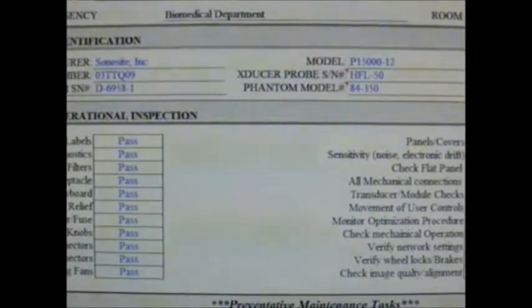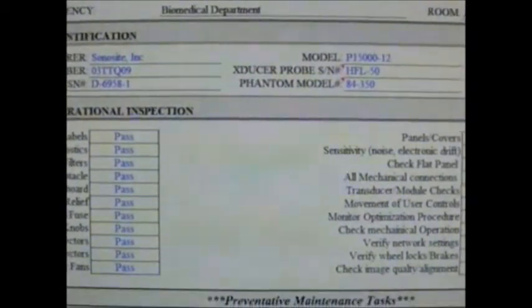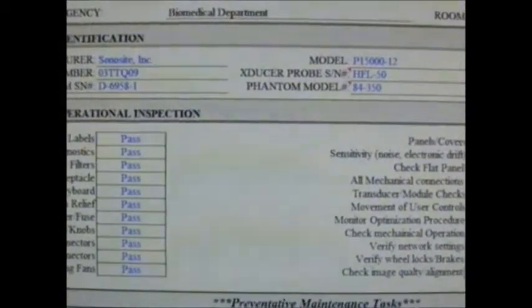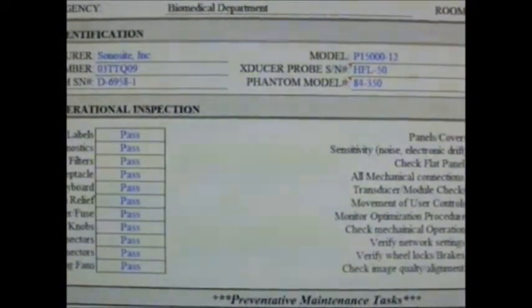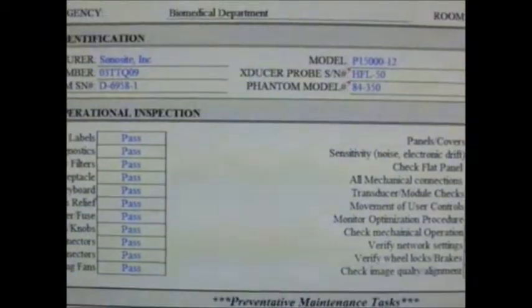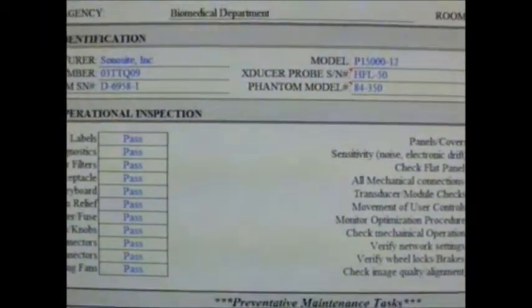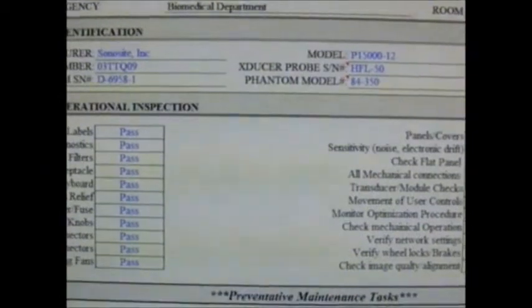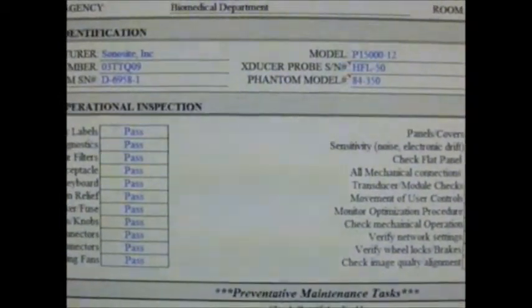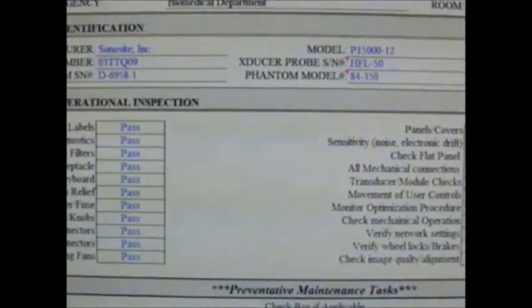This PCI form is going to cover the ultrasound post-calibration inspection or annual quality assurance checks. It's divided into two parts: the top half, which is the equipment identification, and the bottom half, which is the qualitative testing.